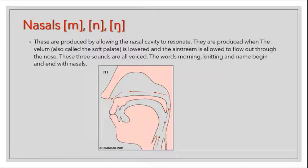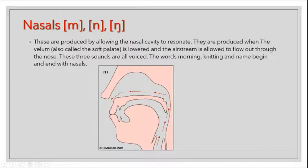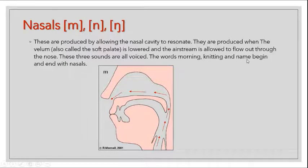These three nasal sounds are all voiced. The words 'morning', 'night', and 'name' begin and end with nasals. With nasals, we are not using the oral cavity but the nasal cavity. So we can use these three sounds: M, N, and NG — where M and N are the familiar ones, and NG is the third nasal sound.